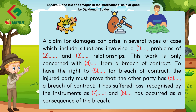This work is only concerned with claims arising from a breach of contract. To have the right to claim damages for breach of contract, the injured party must prove that the other party has committed a breach of contract, it has suffered loss recognized by the instruments as recoverable, and the alleged loss has occurred as a consequence of the breach.